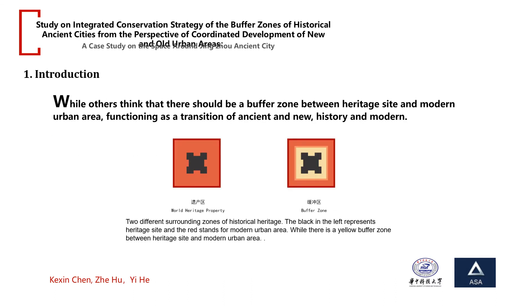These two figures show two different surrounding zones of historical heritage. The black in the left figure represents the heritage site and the red stands for the modern urban area. While one scenario shows no buffer zone, others propose that there should be a yellow buffer zone between the heritage site and the modern urban area, functioning as a transition between ancient and new — between historical and modern urban areas.